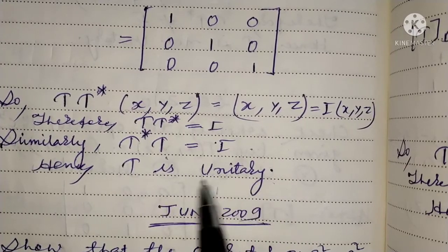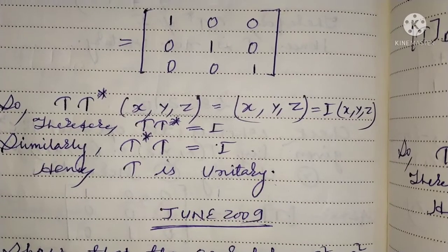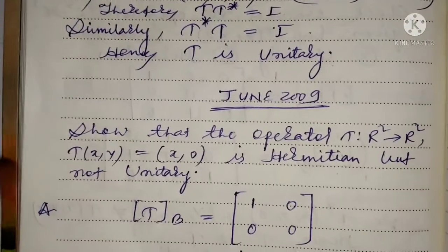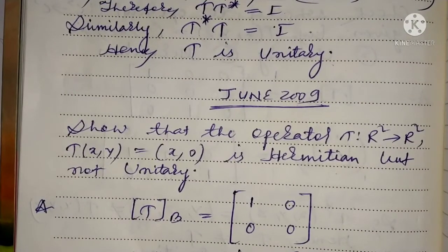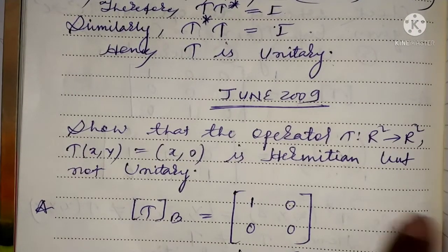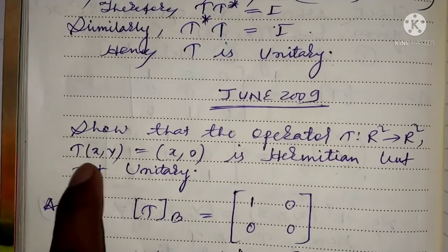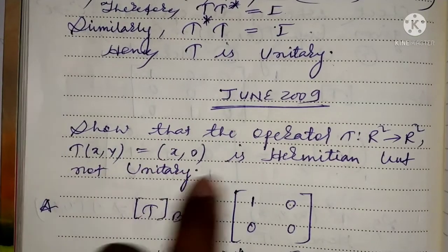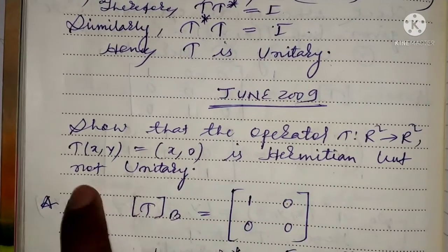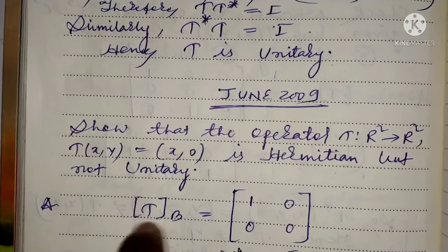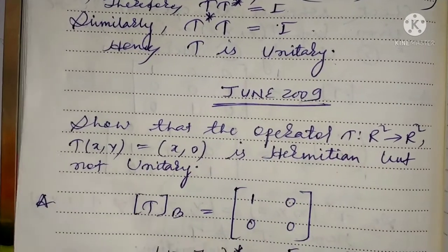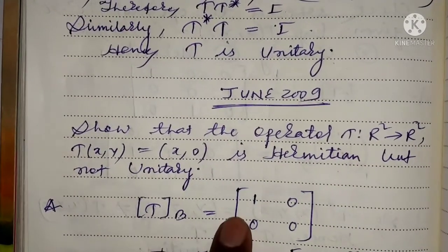Question 3: The operator T from R² to R² defined by T of (x, y) equal to (x, 0) — is it Hermitian but not unitary? Here we have the matrix of T with respect to basis B.